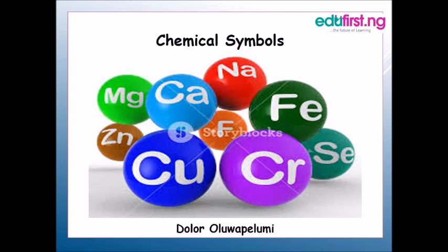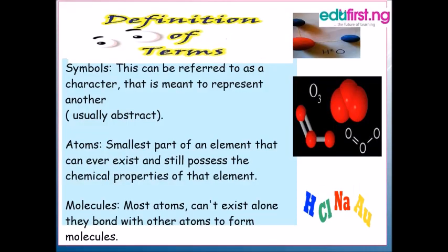Good day students, today we are going to study chemical symbols. First of all, we have to define some terms. What is a symbol? A symbol is referred to as a character that is meant to represent another. When we talk about an atom, we are referring to the smallest part of an element that can ever exist and still possess the chemical properties of that element. When most atoms can't exist alone, they bond together with